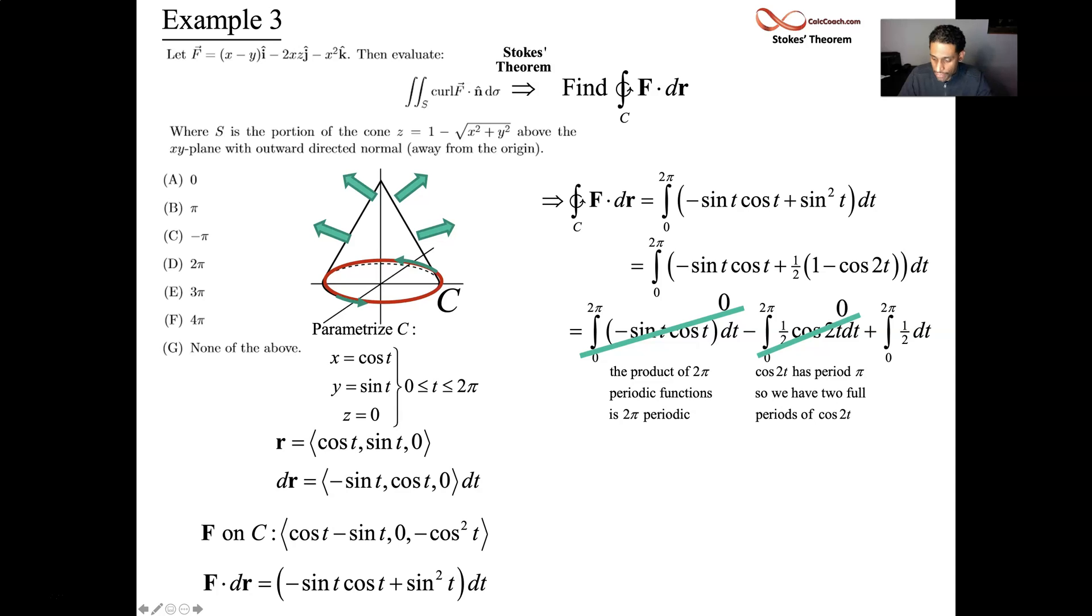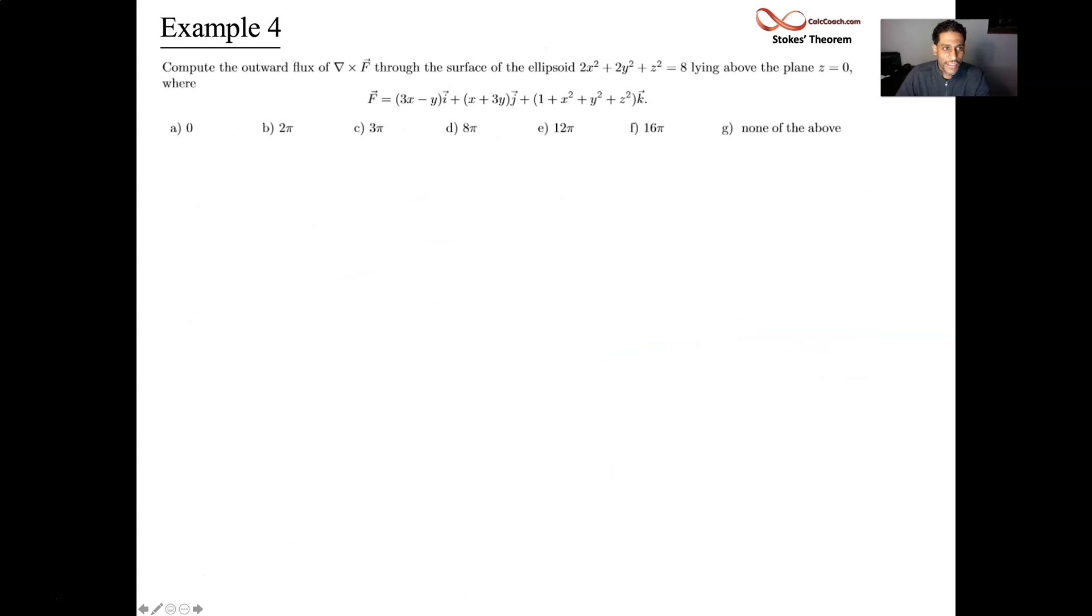And we're just integrating 1 half. Okay, so we get 1 half t from 0 to 2 pi. We get pi for this one as well. We got pi for another example, actually. Okay, executing Stokes' theorem. Instead of calculating the flux of the curl, we are calculating the line integral around the boundary. All right, great. Let's see another example.